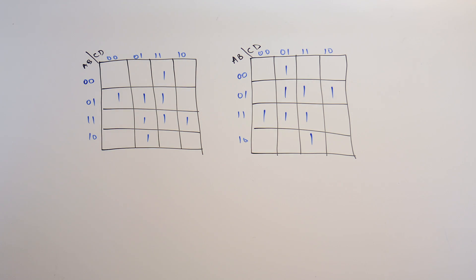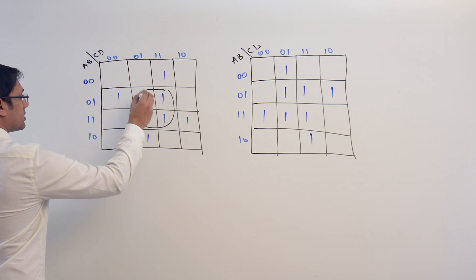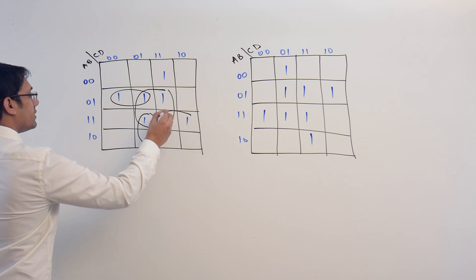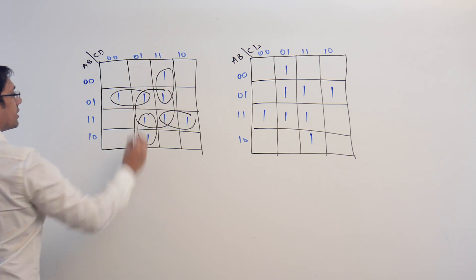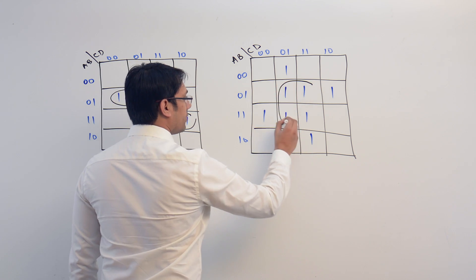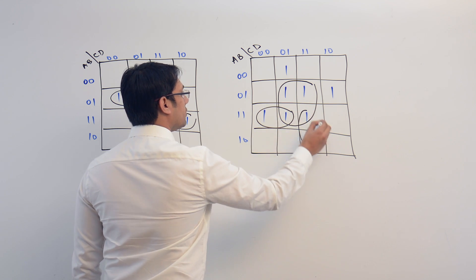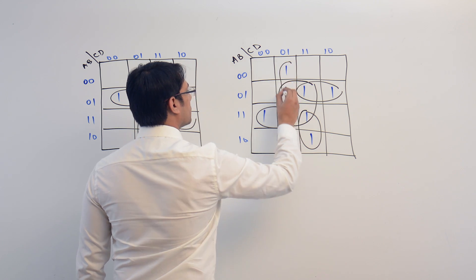Consider these two K-maps. We can make subcubes in these two K-maps like this. This is one subcube, this can be a subcube, this can be a subcube, this can be a subcube, as well as this can be a subcube. In the same way, here in this K-map, this can be a subcube, this will be a subcube, this will be a subcube, this will be a subcube and this will be a subcube.